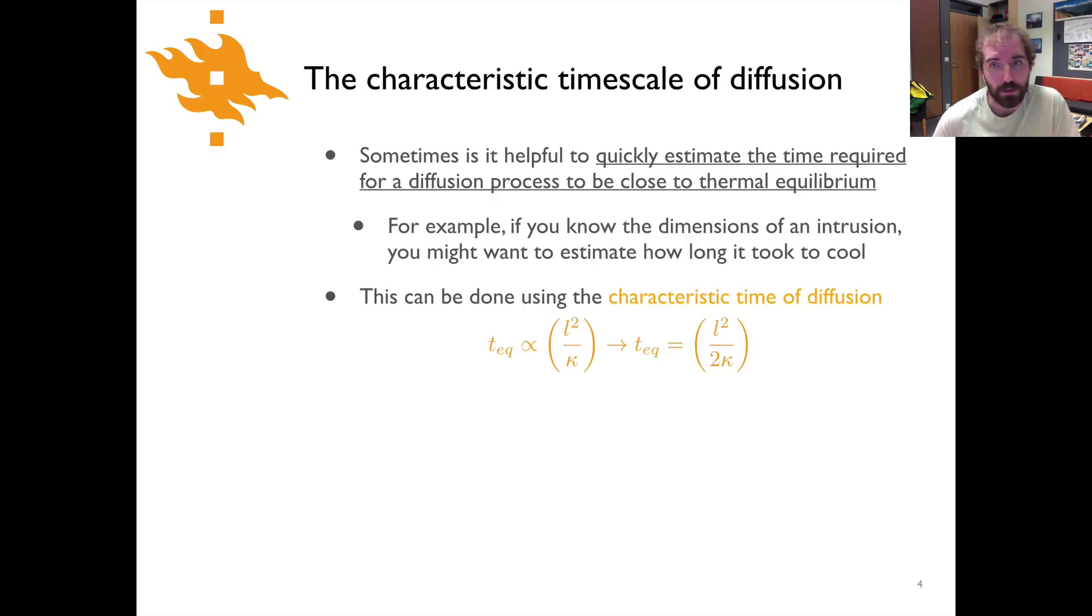The characteristic time scale of diffusion can be done for heat transfer or really any kind of diffusive process. The essential idea here is it's a way of estimating how much time is needed for some kind of diffusion process to be close to its new equilibrium state. For example, if an intrusion is in place somewhere in the crust, a dike or a sill, and you know about how big it is, you might want to estimate how long it takes for something like that to cool down.